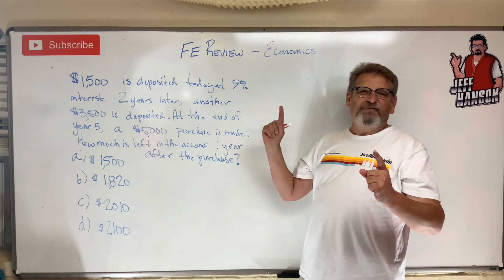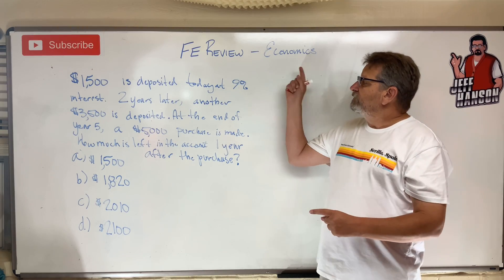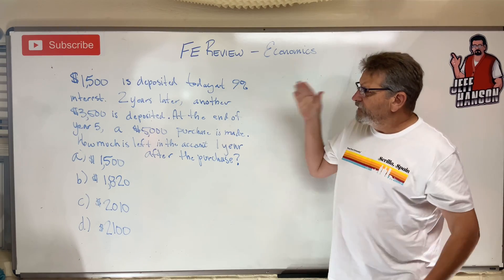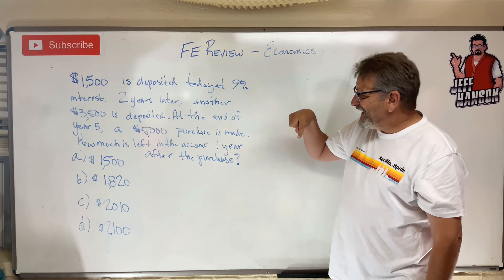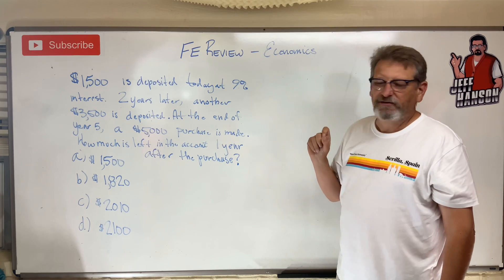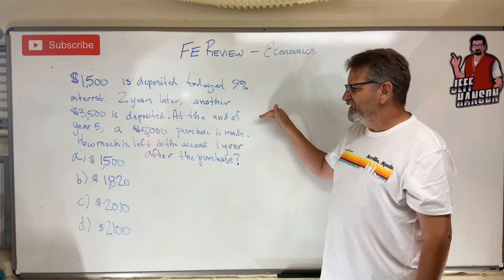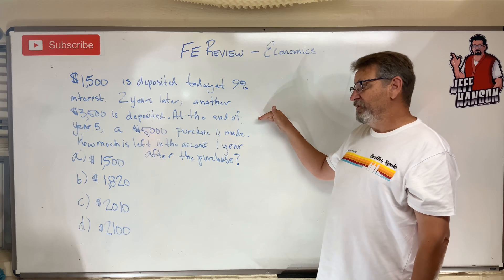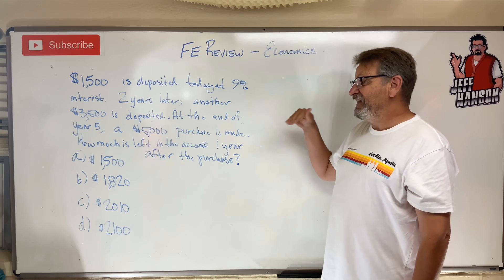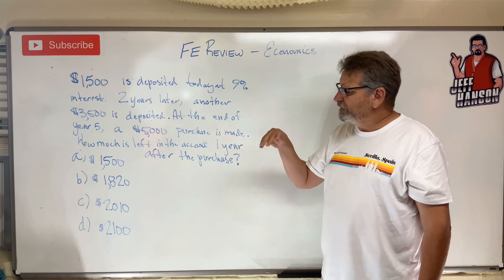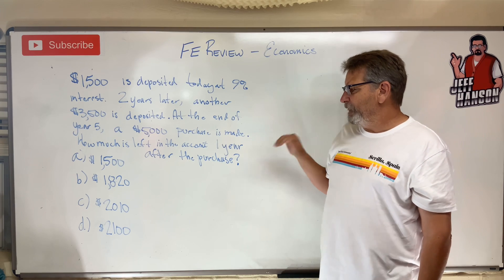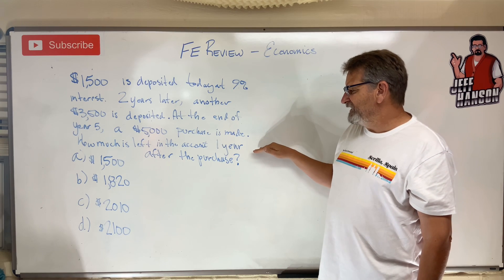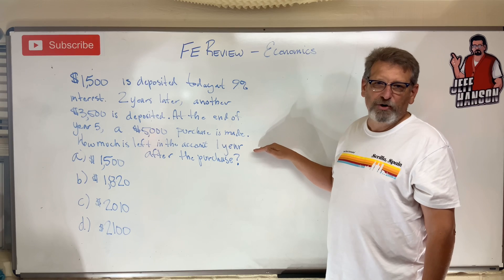Hey gang, welcome back — FE Review, Economics one more time. If you have $1,500 deposited today at 9% interest, two years later another $3,500 is deposited, and at the end of year five you buy a $5,000 piece of equipment. How much is left in the account one year after that purchase?